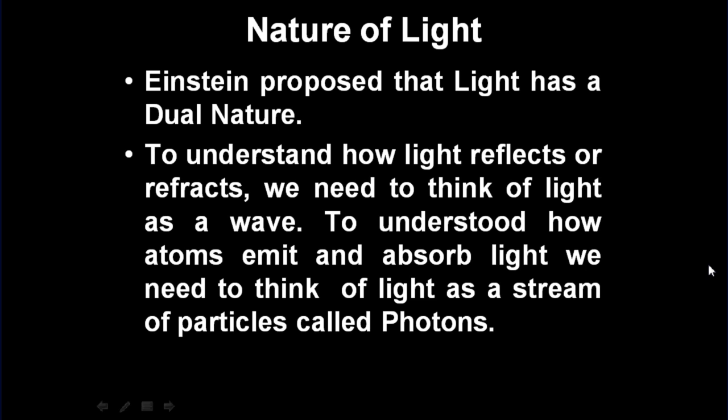Now, there was a confusion regarding whether the nature of light is corpuscular or wave nature. Einstein proposed that light has a dual nature. To understand how light reflects or refracts, we need to think of light as a wave. To understand how atoms emit and absorb light, we need to think of light as a stream of particles called photons.